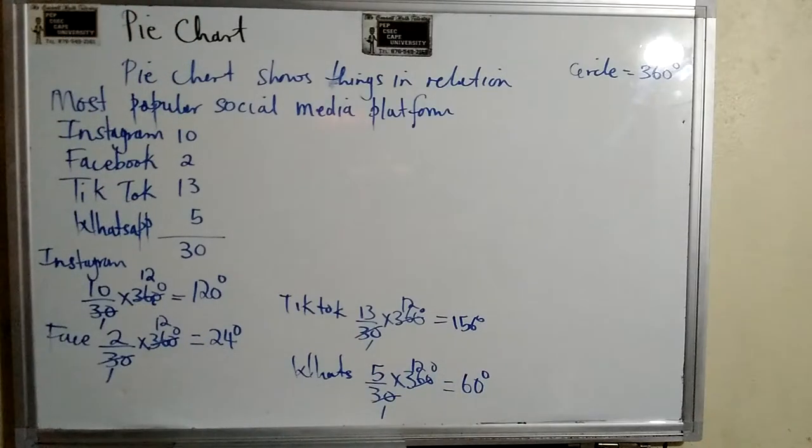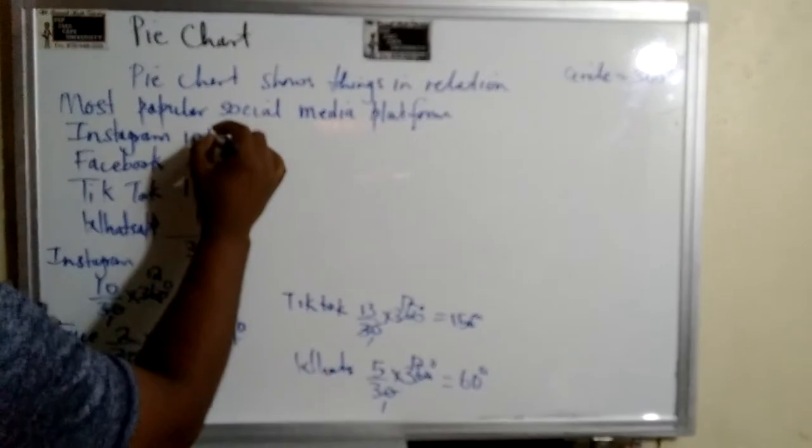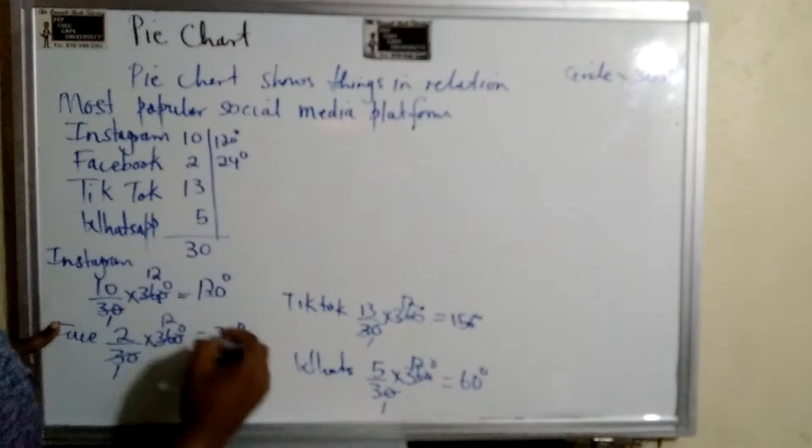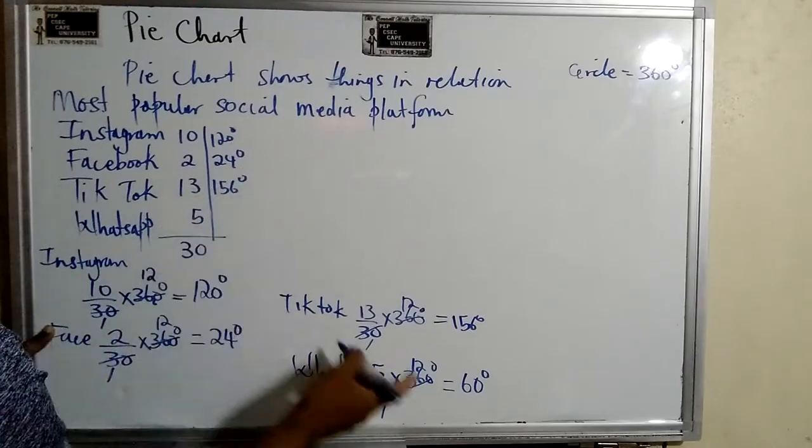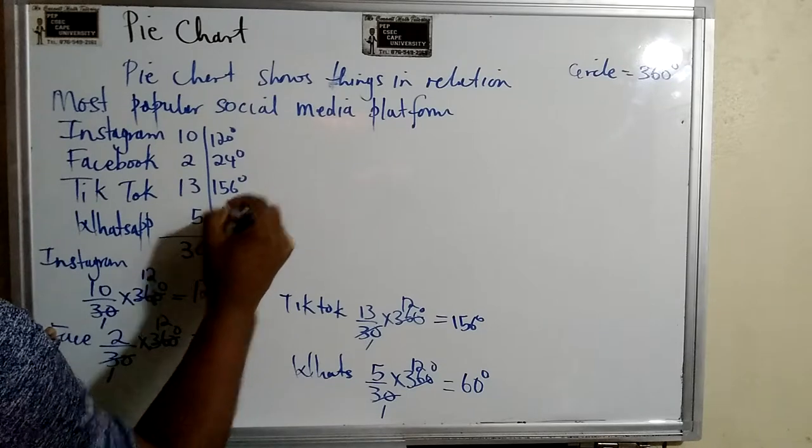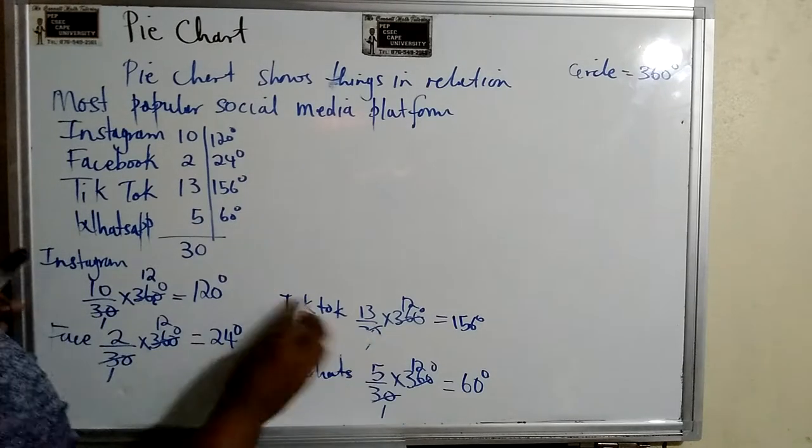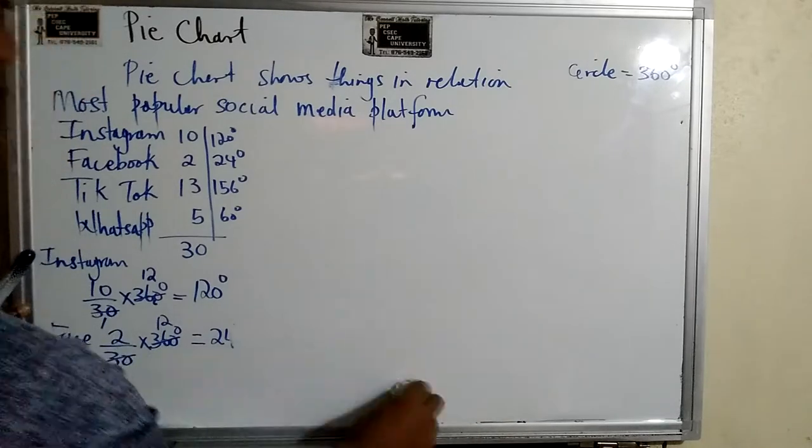Alright, so we have established how much each would get. I'm just going to put the degrees right beside it because I'm going to clear the board. So this is 120 degrees, this is 24 degrees, and this is 156 degrees, and this is 60 degrees. So guys, I'm just going to clear the board now. I'm going to draw the circle, and then we're going to put in the degrees.